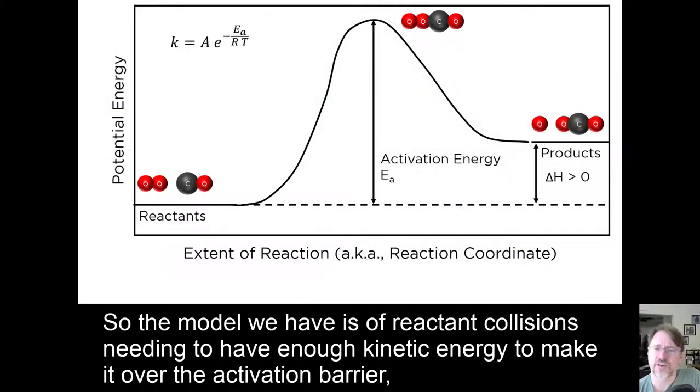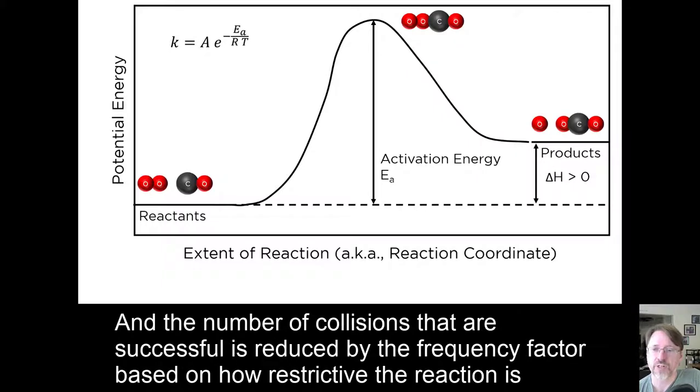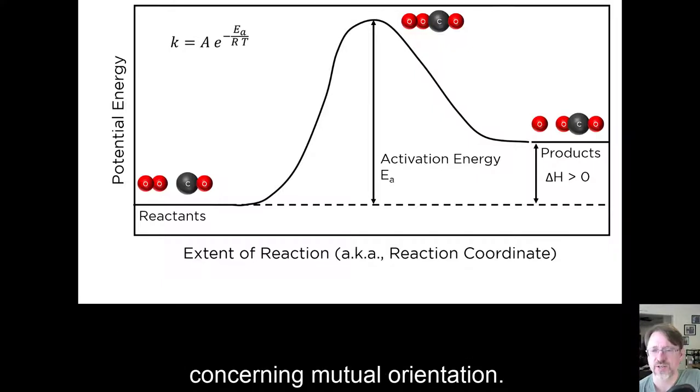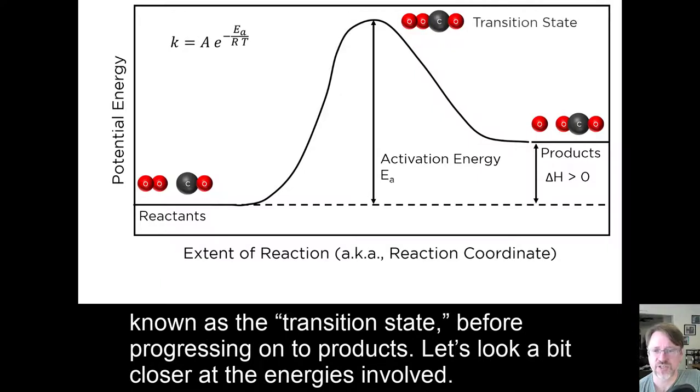So, the model we have is of reactant collisions needing to have enough kinetic energy to make it over the activation barrier, which has a magnitude known as the activation energy. They acquire this kinetic energy by virtue of the temperature, and the number of collisions that are successful is reduced by the frequency factor based on how restrictive the reaction is concerning mutual orientation. A collision that has enough energy and the right orientation makes it over the barrier, passing through a configuration known as the transition state, before progressing onto products.